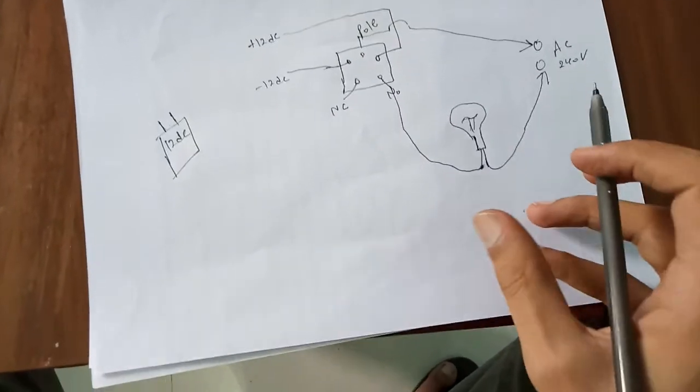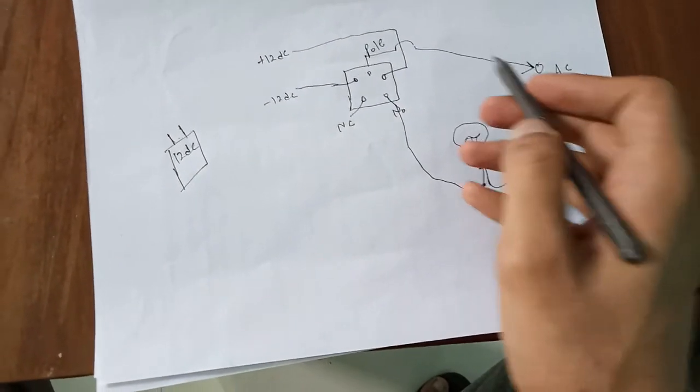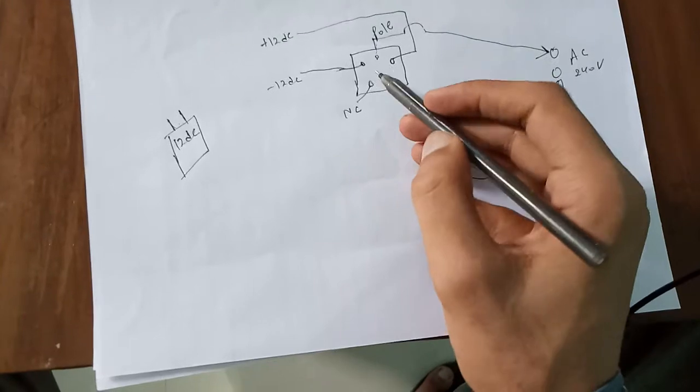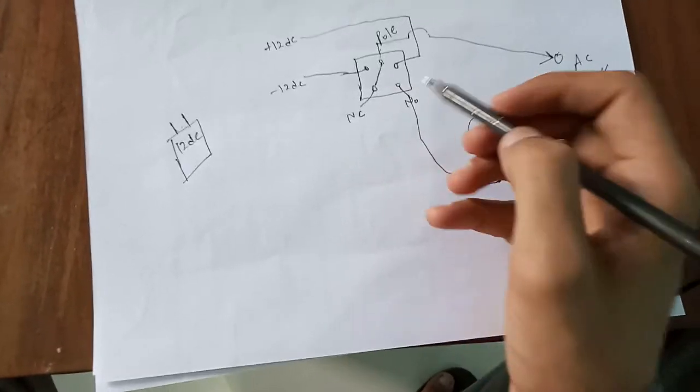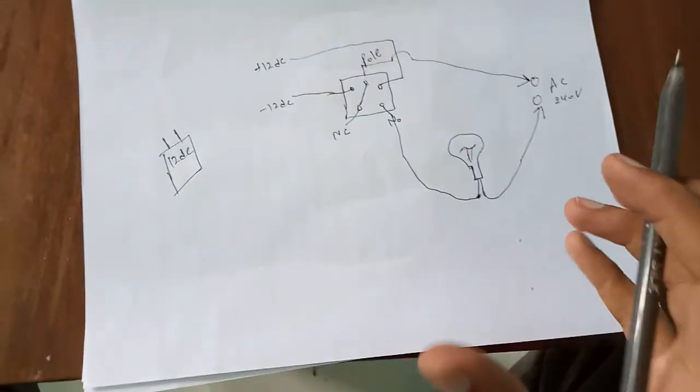Now in this condition, your bulb will be off because AC current is flowing through a pole, but it is in normal close condition. And your second wire of bulb is directly connected to AC. The circuit is incomplete yet.